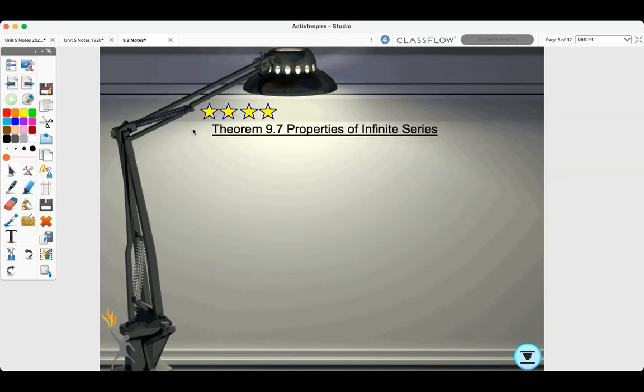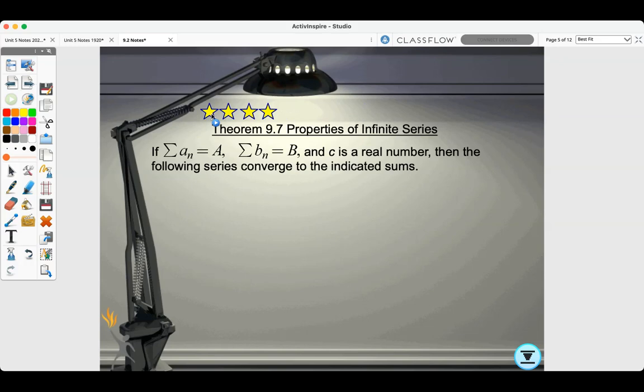Theorem 9.7, Properties of Infinite Series. If the sum of a_n equals a, and the sum of b_n equals b, and c is a real number, then the following series converge to the indicated sums. When the series is multiplied by c, it converges to c times a. When the series are added together, it equals a plus b, and when they're subtracted, it equals a minus b.